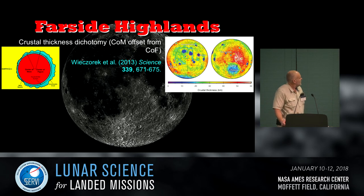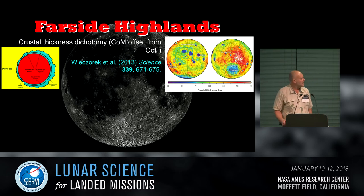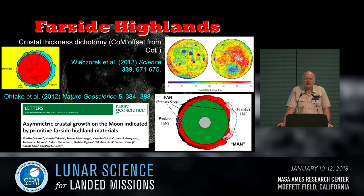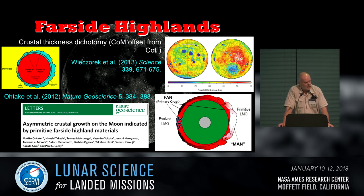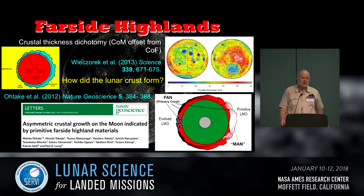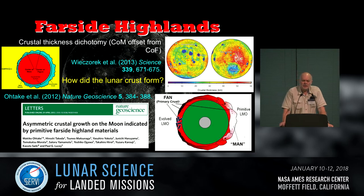The far side highlands present lots of debates about why we have a crustal dichotomy — it's thicker on the far side than the near side, which is why most of the basalts are on the near side. There's also the idea of a primitive nature to those far side highlands. We have lunar meteorites that probably come from the far side, but we don't know exactly where on the far side they came from. Samples become key to understanding how the lunar crust formed. Models are great with sparse data because everything works, but as soon as you get more data — well, that's job security for a scientist.